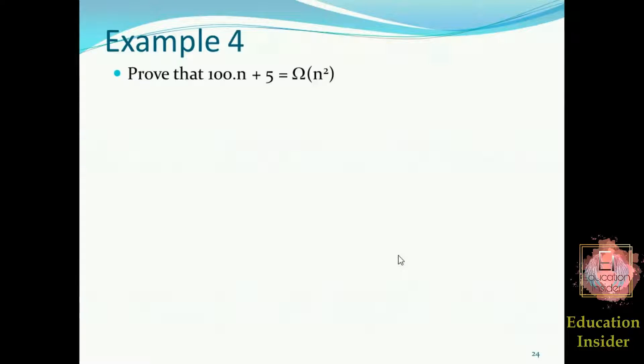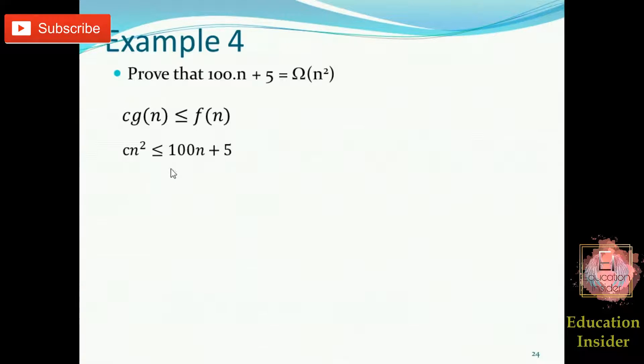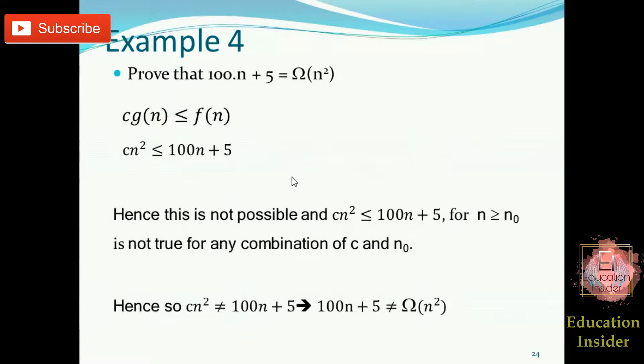Now let's move to another example, example number 4. First, let's assume inequality for this and populate the values of f(n) and g(n). Let's observe this inequality here. See, this cannot be proved as this right side is smaller than this left side. So we can simply say that this cannot be proved. Big Omega or lower bound of this function cannot be found out.